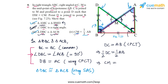So CM equals half of AB, which proves part four. To recap: we used the congruence of triangle DBC and triangle ACB from part three, which gives DC equals AB, and hence their halves are equal, so CM equals half of AB. All four parts are now proved.